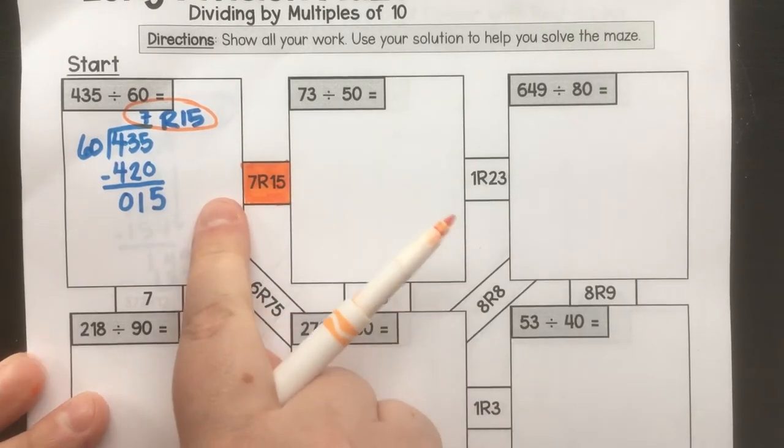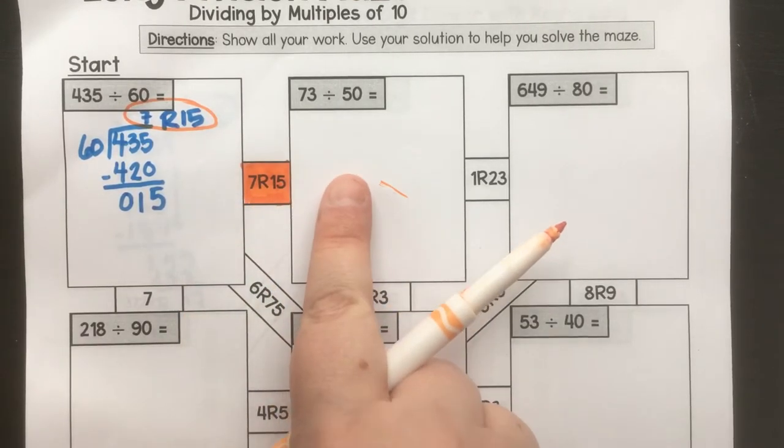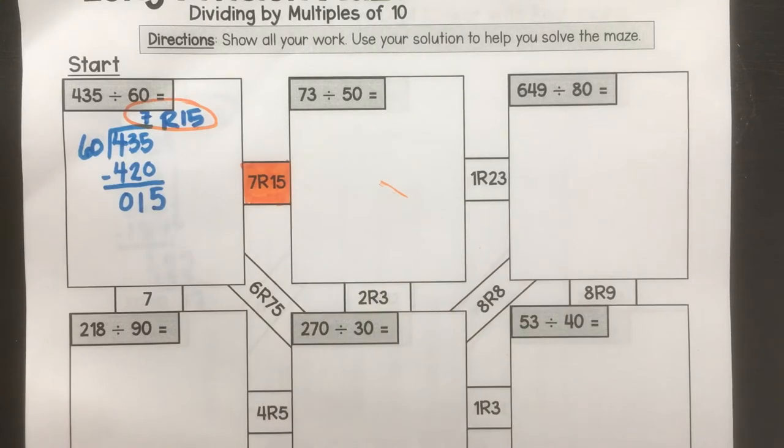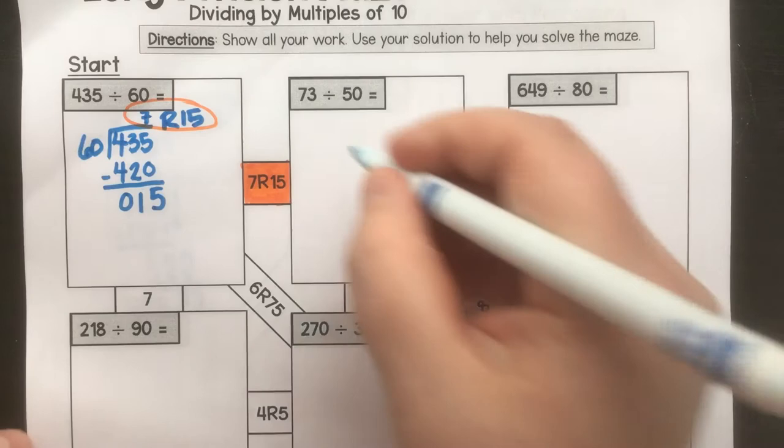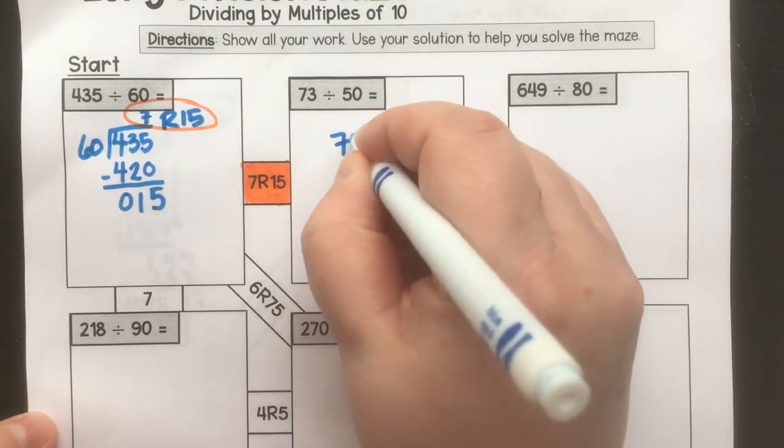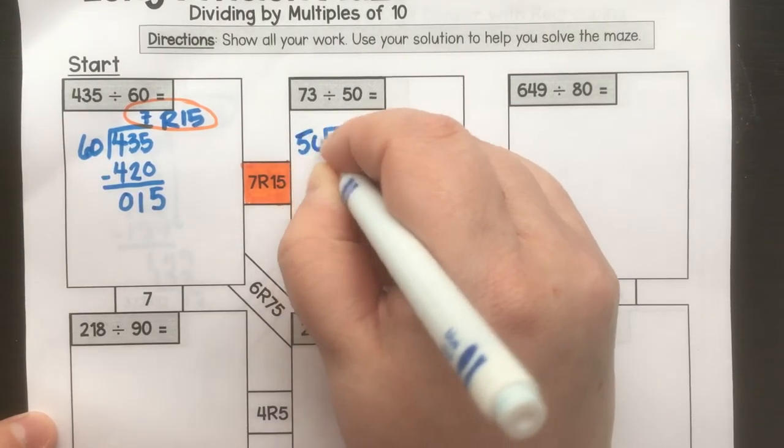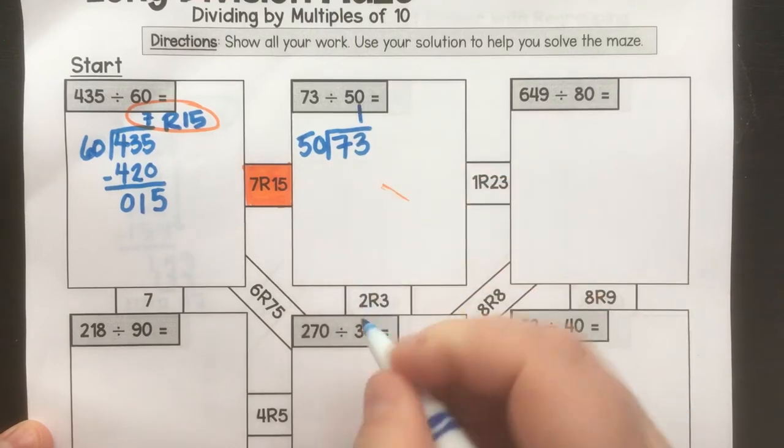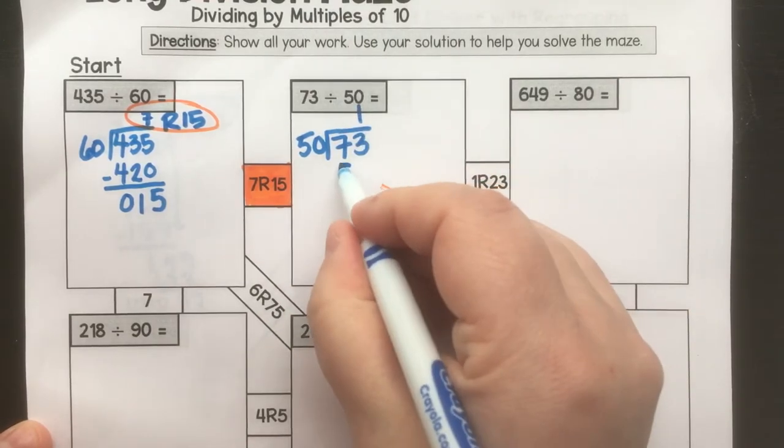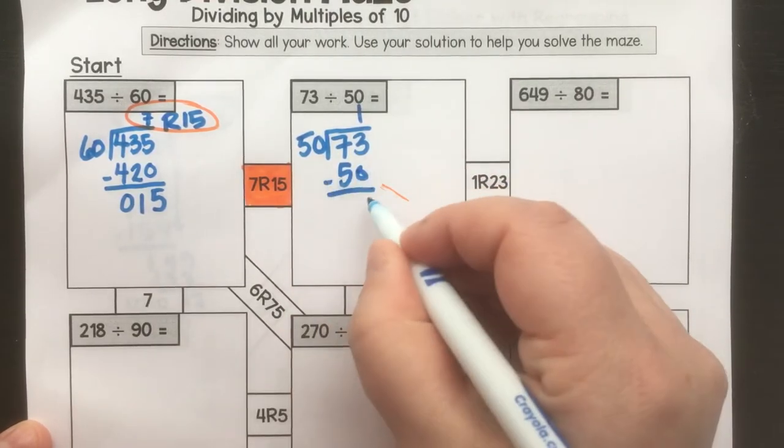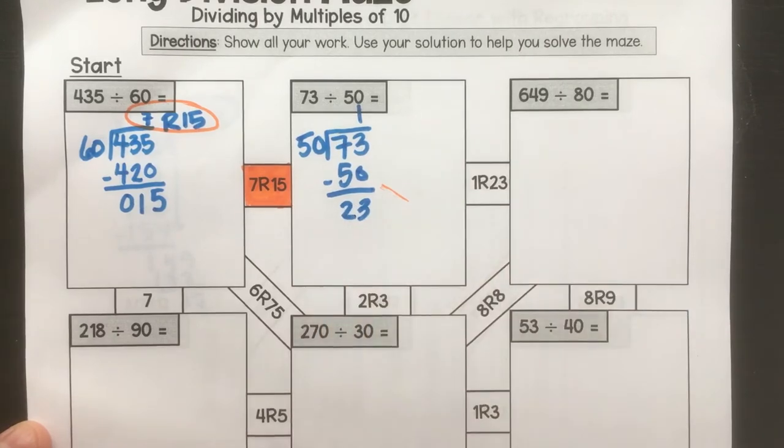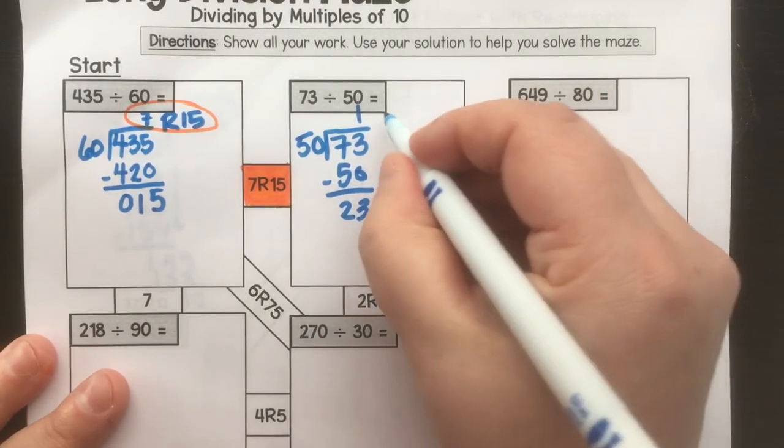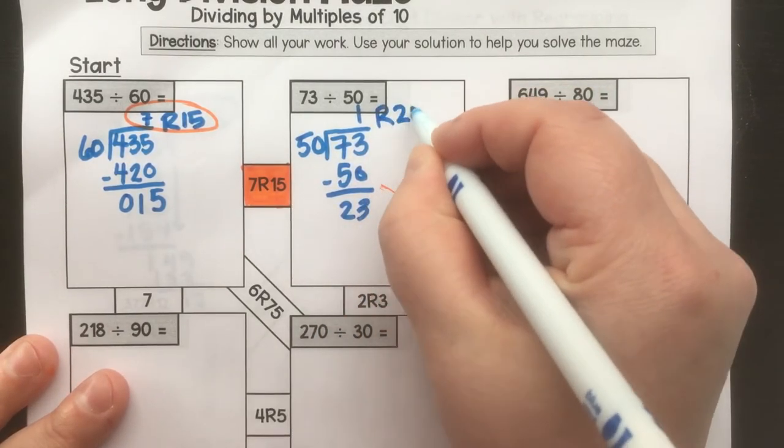And then I'm going to follow it. So my next problem is right here, 73 divided by 50. So I'm going to do this problem. I know that there is 1 50 in 73. Remember, I'm showing all of my work. I cannot continue. So I have one remainder 23.